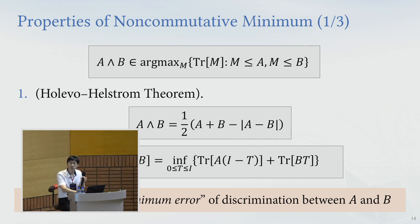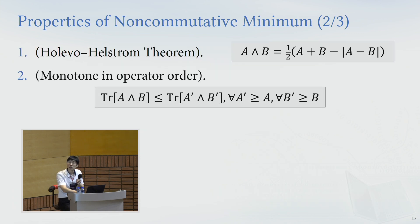Okay, and there are some basic properties for this non-commutative minimum. So the trace of non-commutative minimum is monotone increasing under the state, you can see this immediately from the definition.